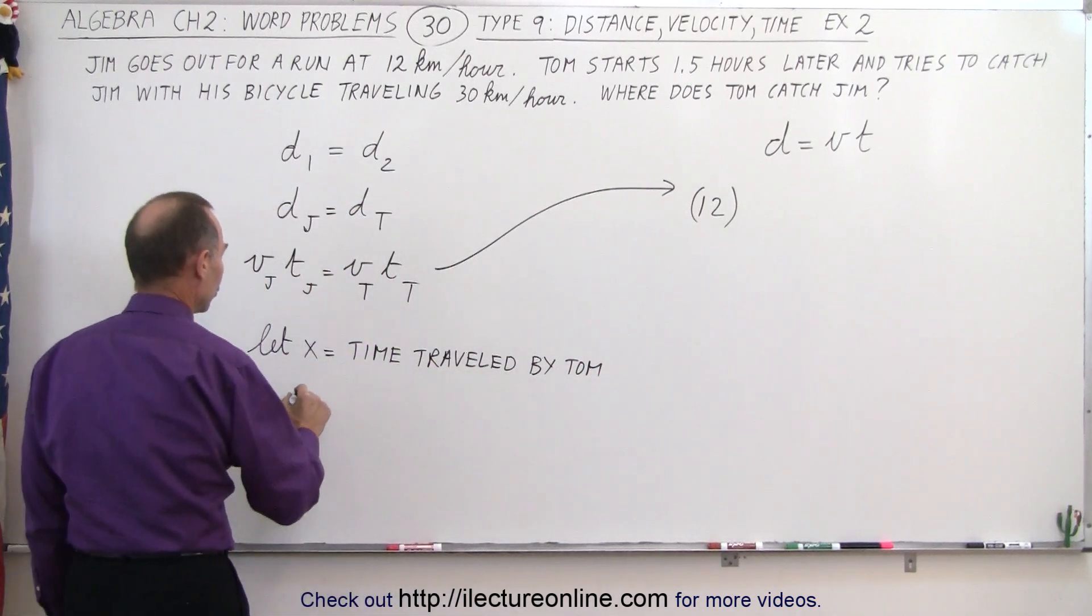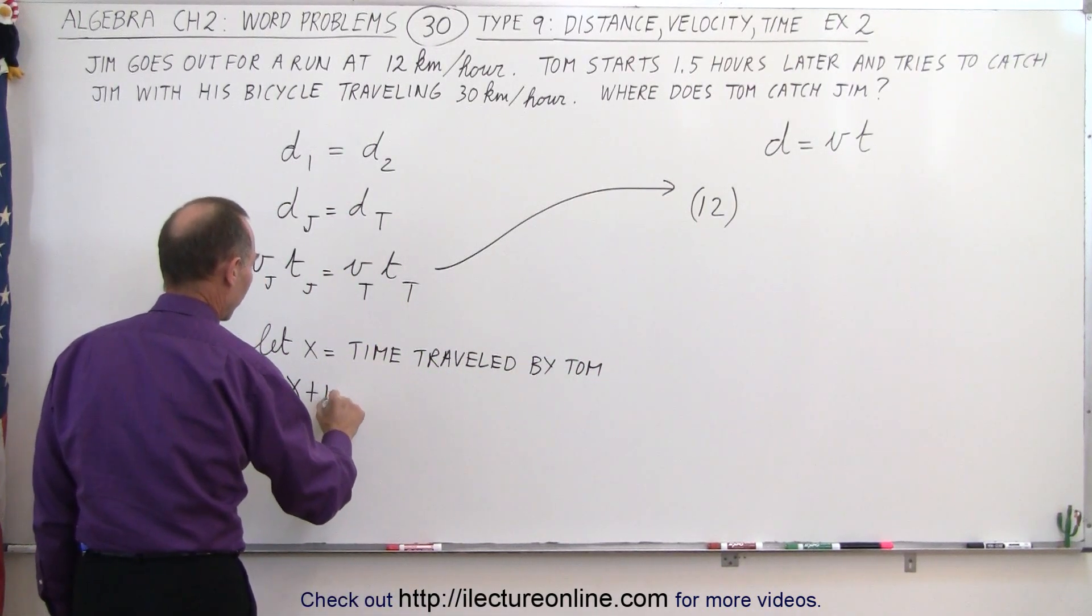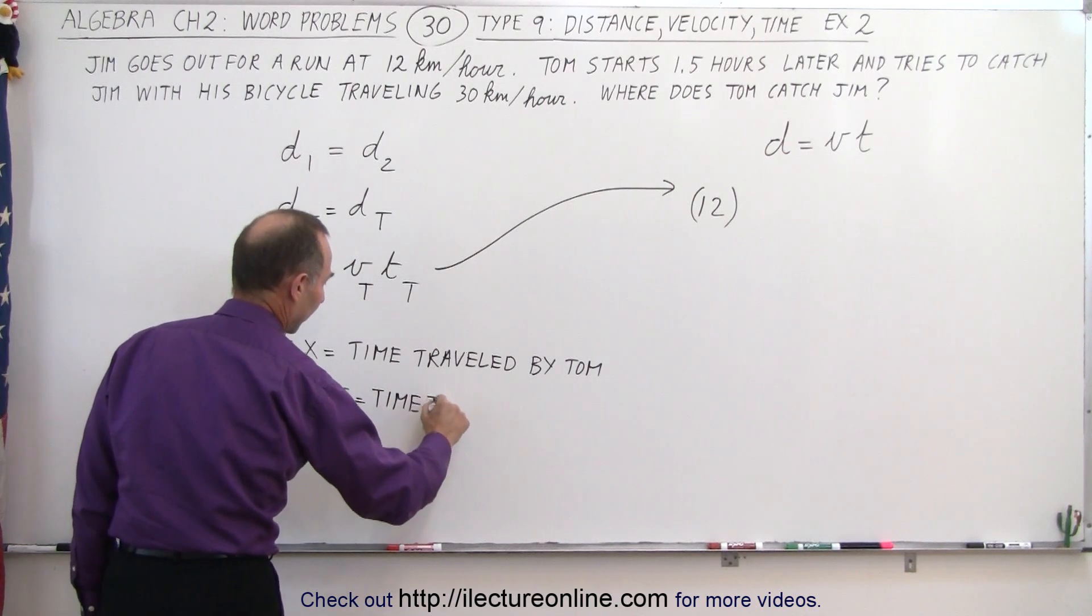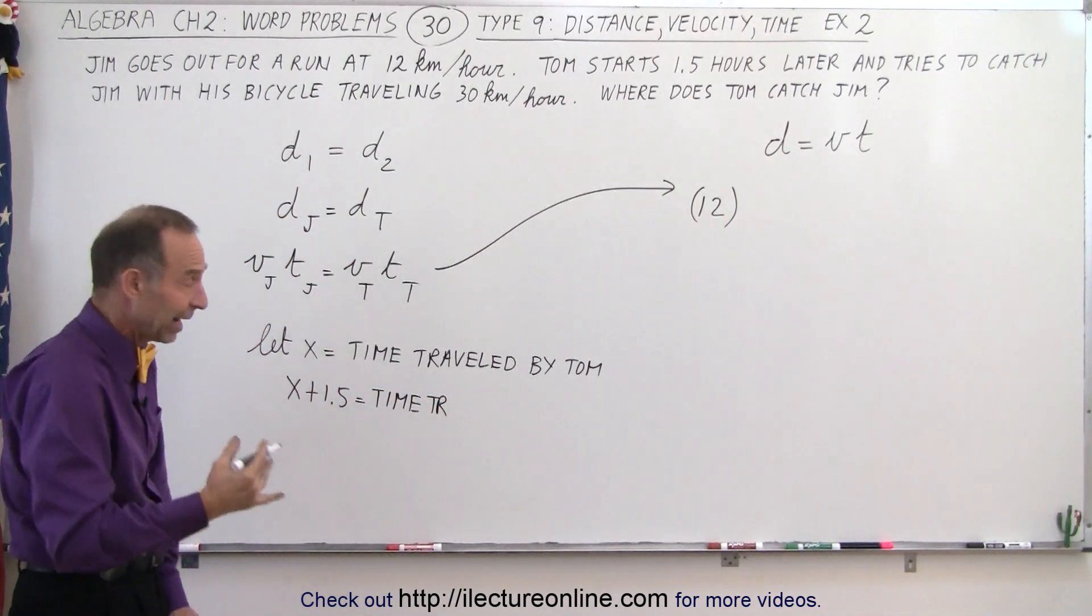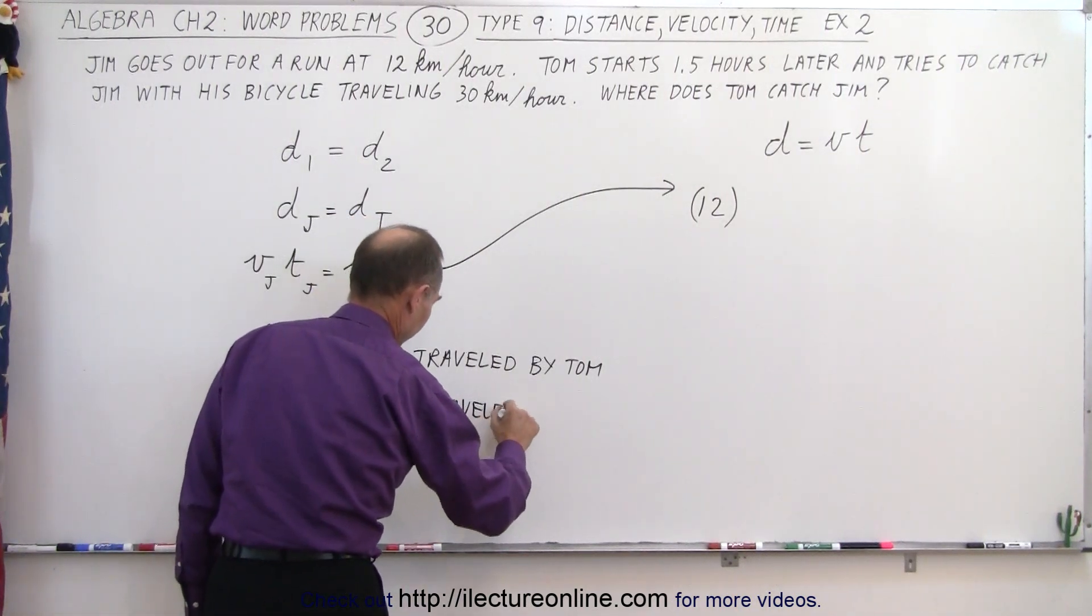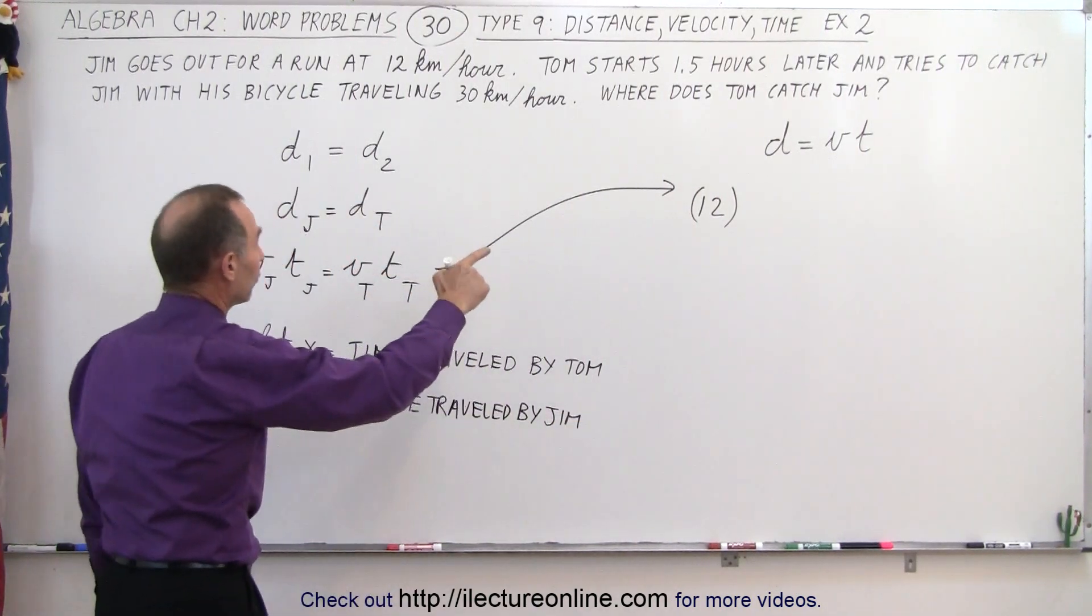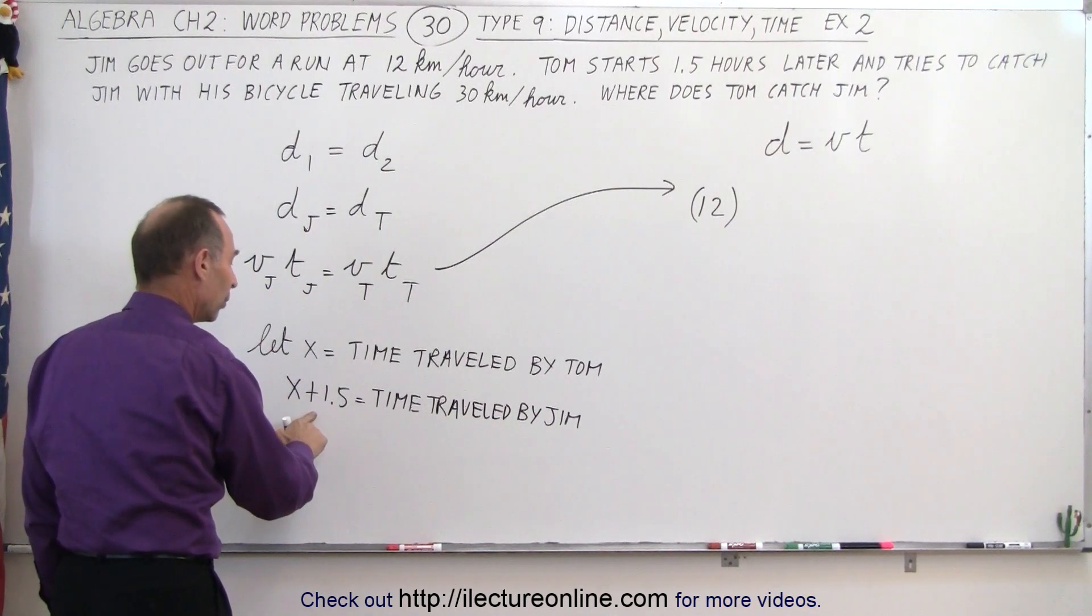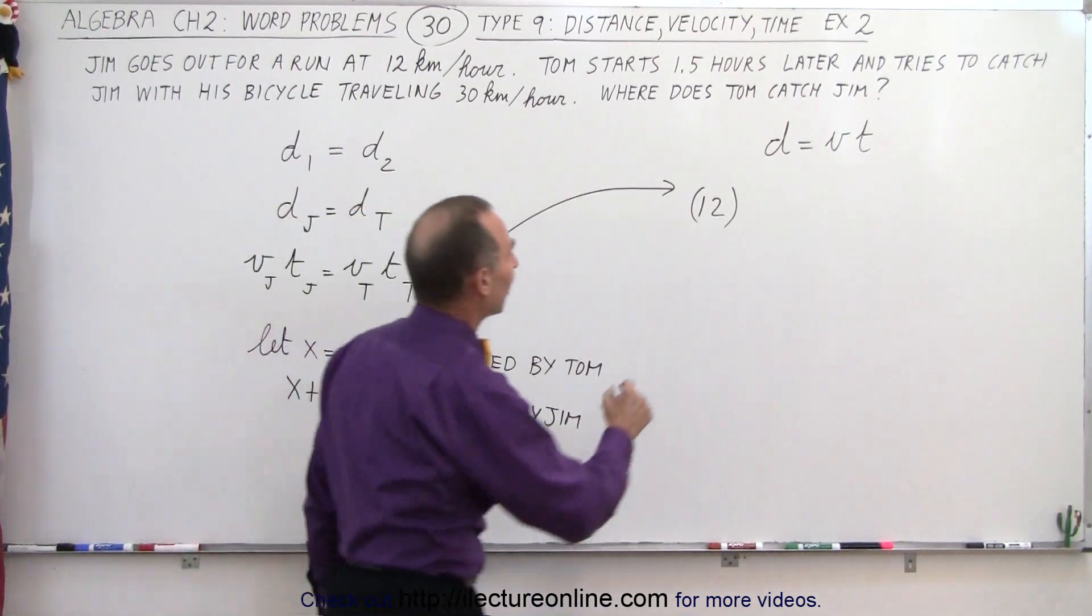If that's true, then x plus 1.5 equals the time traveled by Jim because Jim left one and a half hours before Tom left. So distance equals velocity times time, time of Jim would be x plus 1.5.